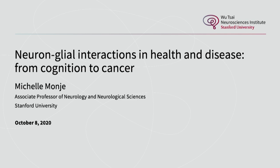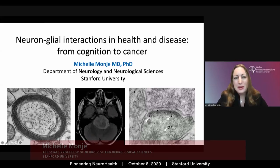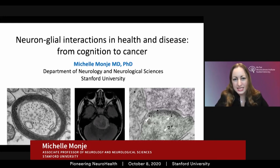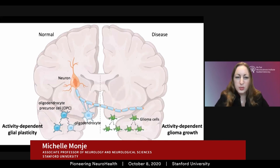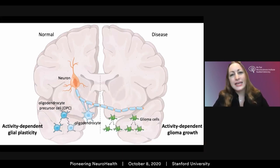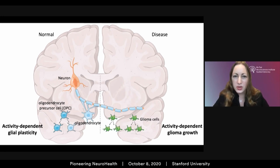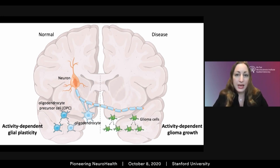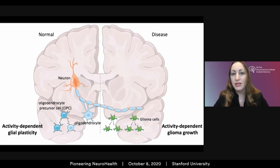Thank you so much for having me. I'm going to speak to you today about neuron-glial interactions in health and disease. Broadly, my research program focuses on understanding the molecular language that cells use as they communicate and work together to build and remodel the brain. I want to tell you one story in two parts: how neurons communicate with glial cells that form the myelin sheath in the healthy brain, how this is a dynamic, experience-dependent process throughout life, and how malignant glioma hijacks these interactions for its own gain.